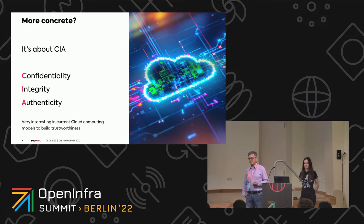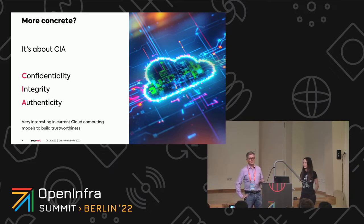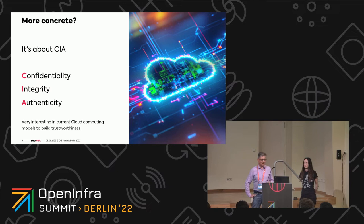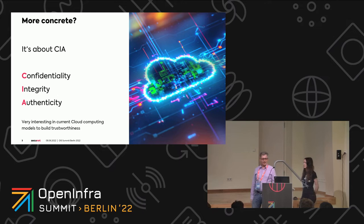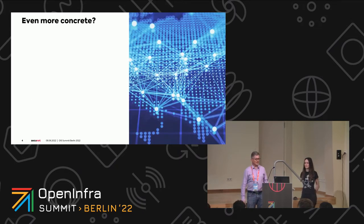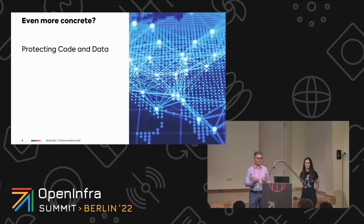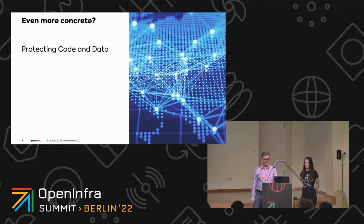Confidential computing is a mechanism to provide trustworthiness. You might have heard about it in the context of workload protection — a common use case where it's used to protect workload against providers. But we wanted to look at how we can use that for the control plane. To be more concrete, it means protecting data in these three dimensions, and especially also code, not only data. This is a new paradigm, something we didn't have in the past.